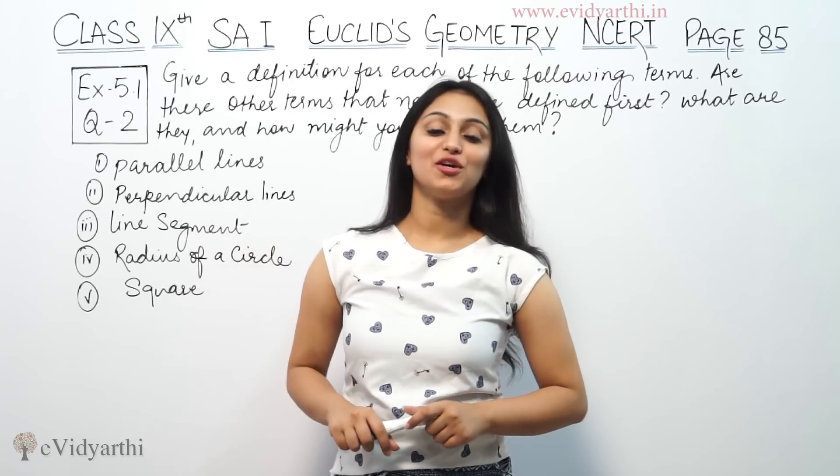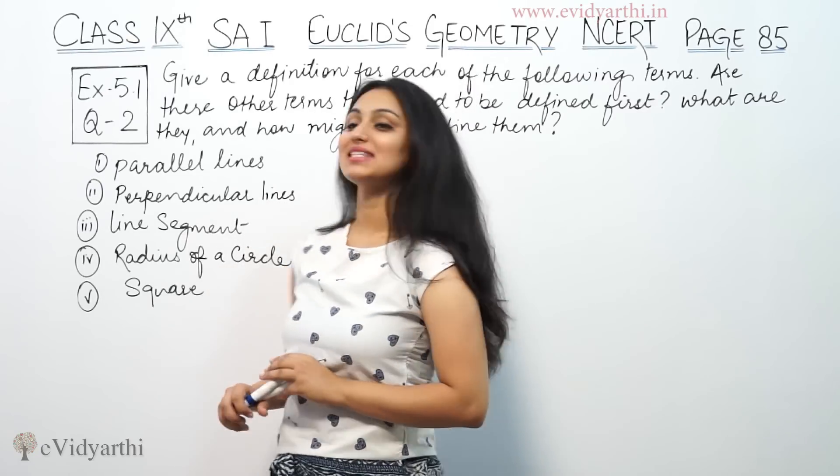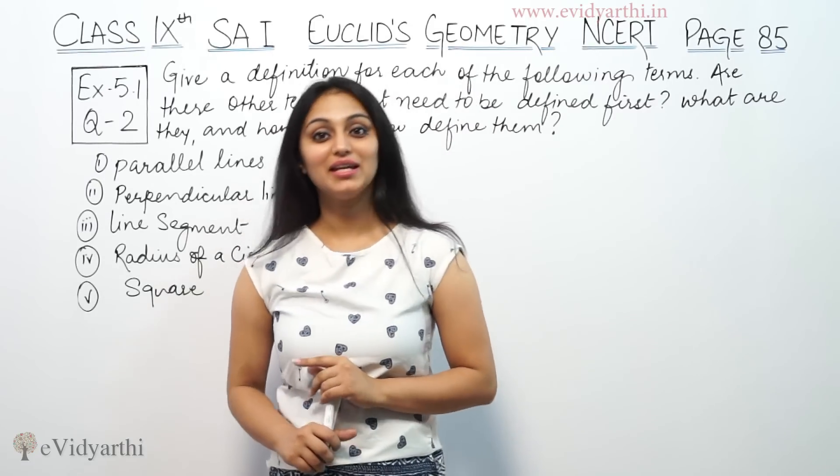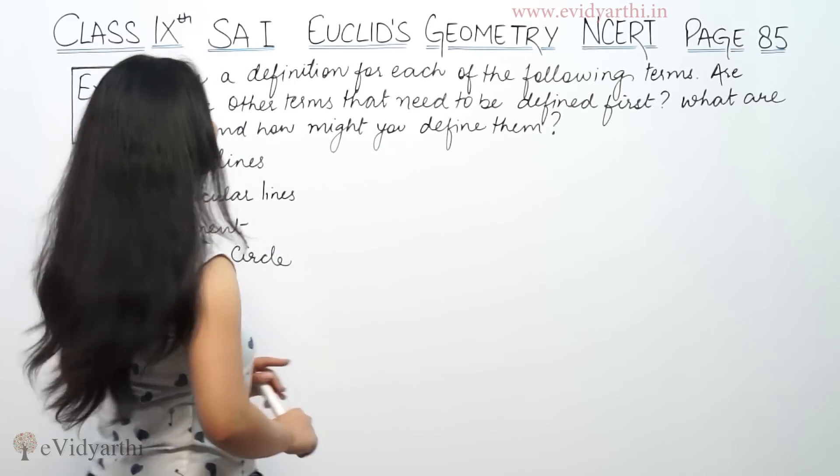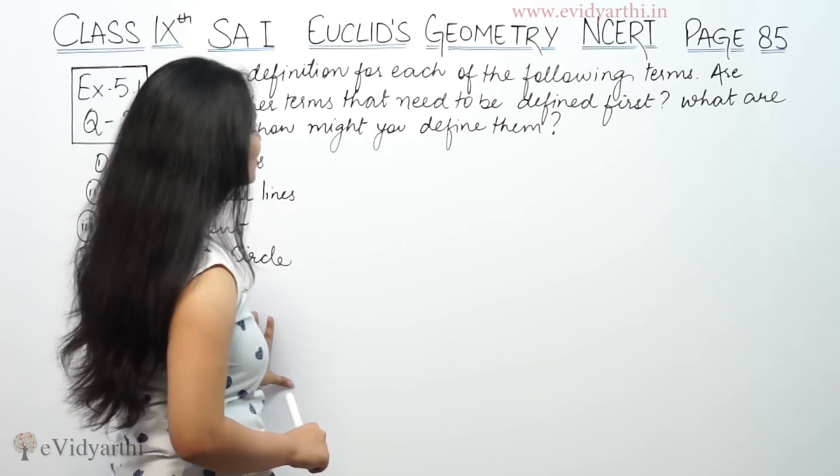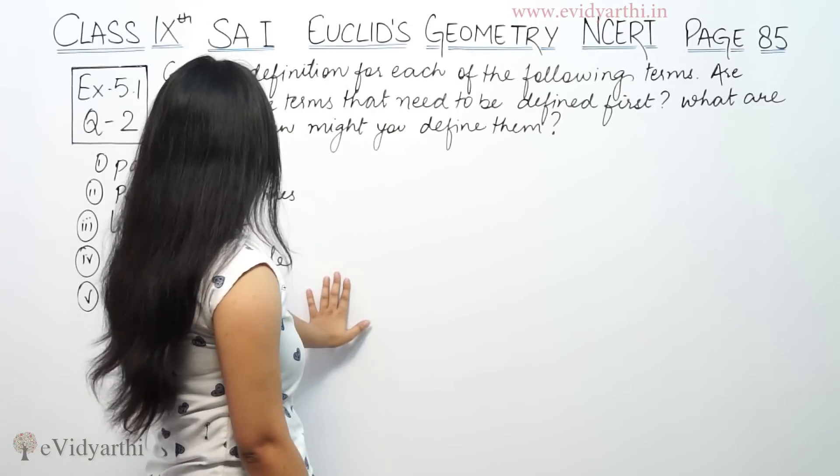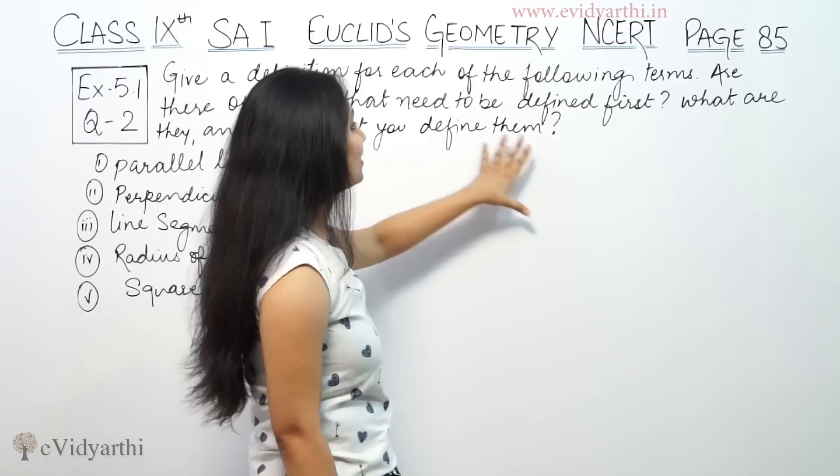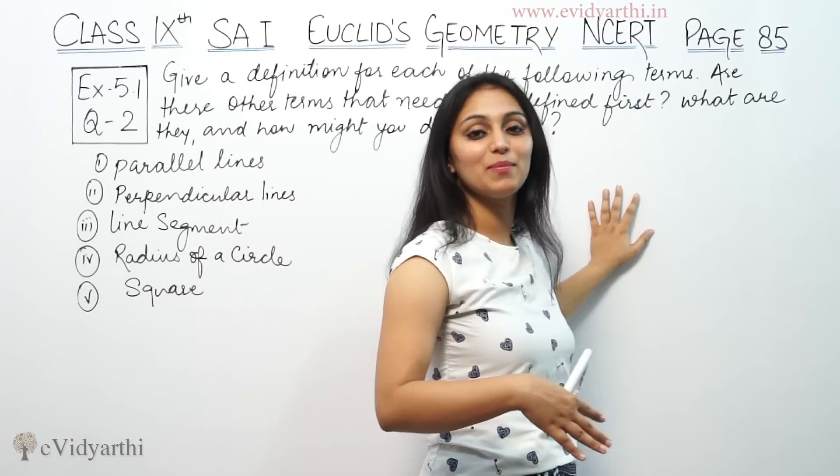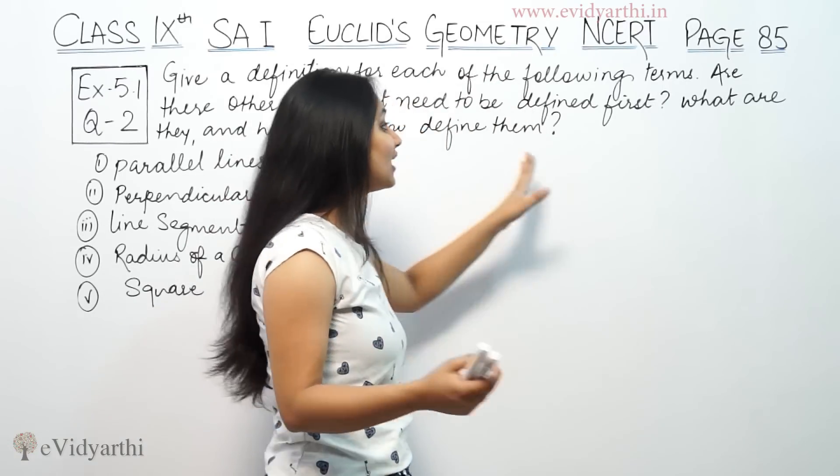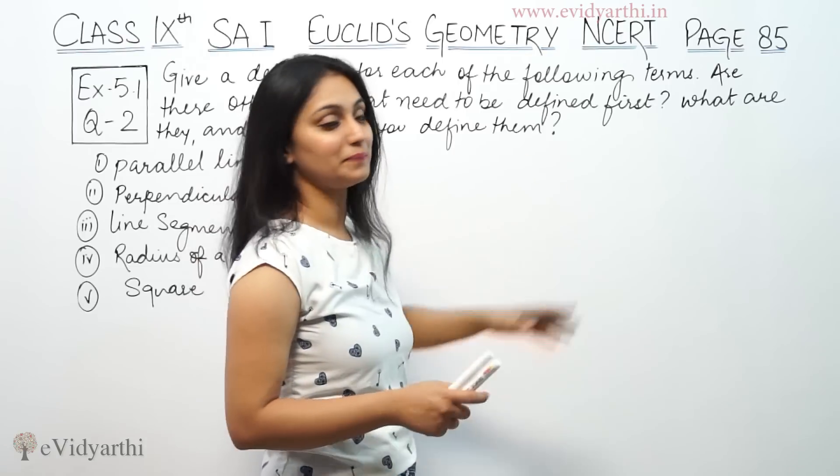Hi, this is Khushbu with another question of Euclid geometry. This is question number 2 from exercise 5.1, page number 85 from NCERT. This says, give a definition for each of the following terms. How many terms do you define? Are there other terms that need to be defined first? What are they and how might you define them?